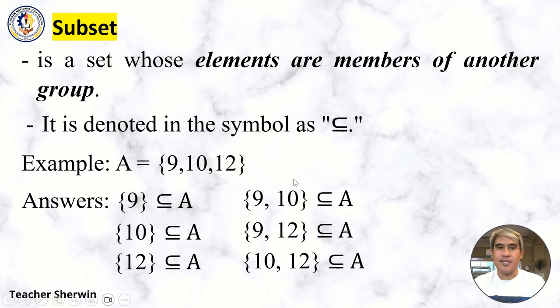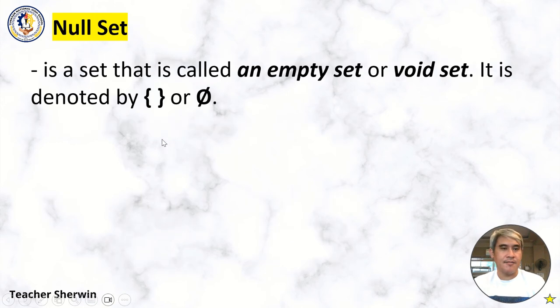Null Set is a set that is called an empty set or void set. It is denoted by the symbols { } or Ø.